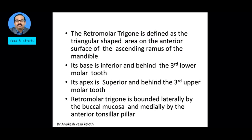Its base is inferior and behind the third lower molar tooth, and its apex is superior and behind the third upper molar tooth. So imagine the space like a triangle — the base is at the bottom and the apex is on the top — and both ends are behind the corresponding third molars. The Retro Molar Trigon is bounded laterally by the buccal mucosa and medially by the anterior tonsillar pillar.